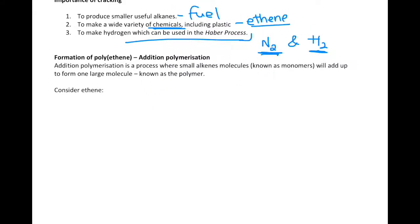Now let's look at the last part on alkenes: addition polymerization. This is the process where small alkenes, known as monomers, join together. Polymerization is the process of making a very large molecule out of many small molecules. The monomers add together to form one large molecule known as a polymer, which can contain millions and millions of atoms.